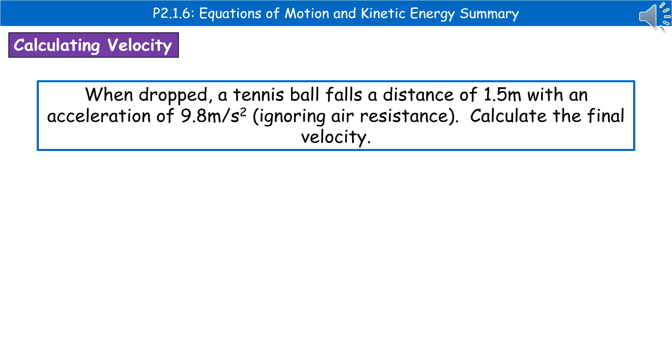To give you an idea of the kind of question you could be asked where you'd have to use that equation, I've given you a sample question there. When dropped, a tennis ball falls a distance of 1.5 metres with an acceleration of 9.8 metres per second squared, ignoring air resistance. Calculate the final velocity.